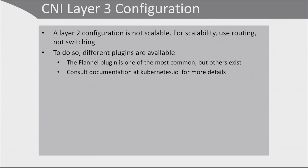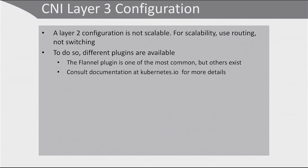Layer 3 networking is significantly more complicated. You would need it because layer 2 configuration is not scalable. If you want to use scalability, then you should consider using routing. The requirement is that the pods and the nodes are able to communicate to one another directly by using direct IP addresses. You cannot use NAT in Kubernetes pod to pod networking, but there is no restriction on routing. That's exactly what CNI layer 3 is about. Different plugins are available — the flannel plugin is one of the most common. I would advise you to consult the documentation at kubernetes.io for more details.